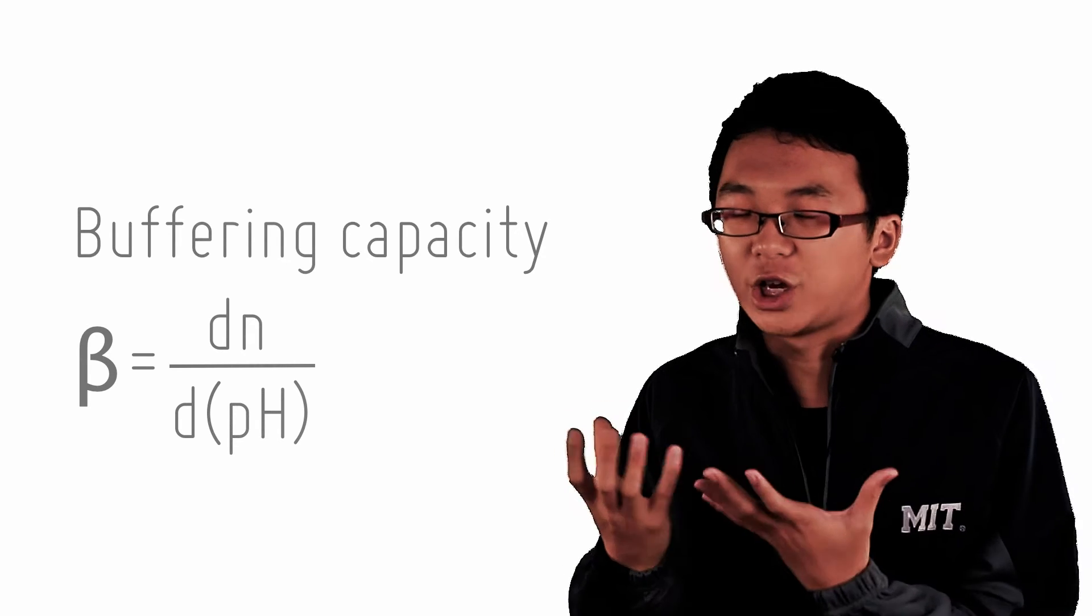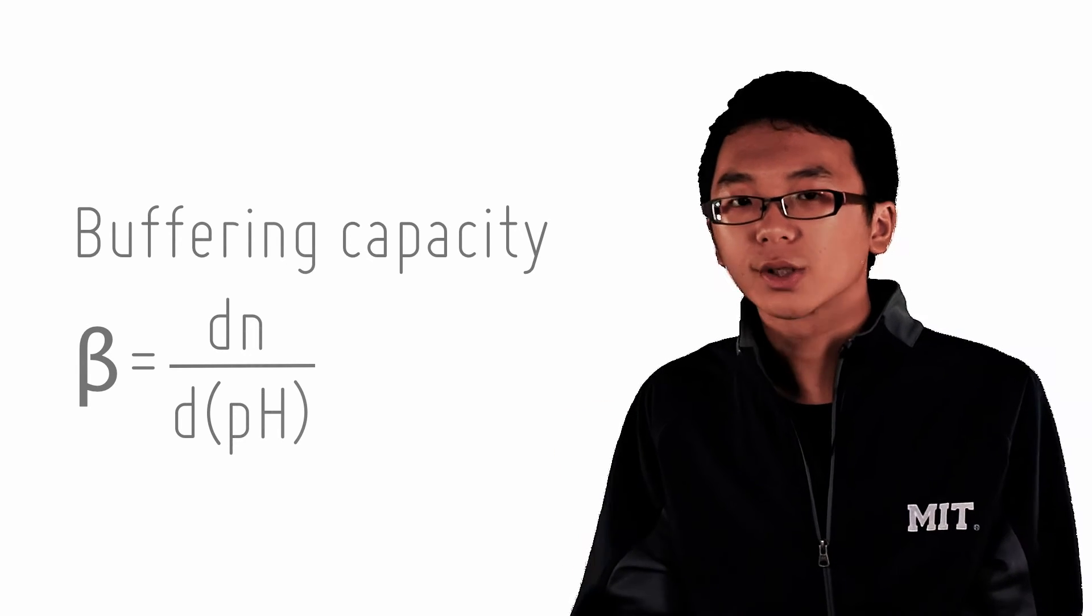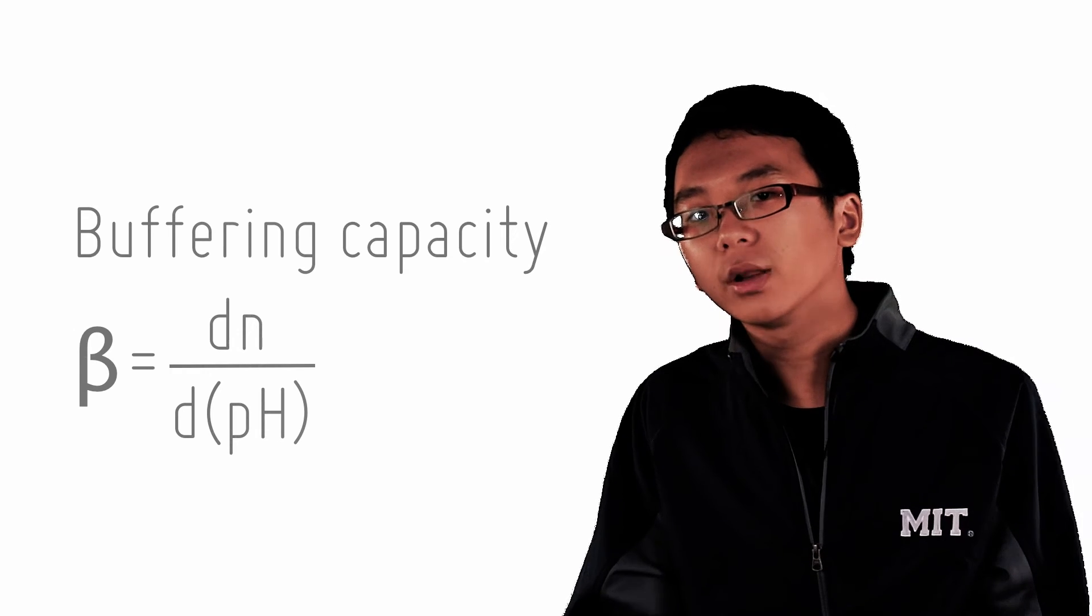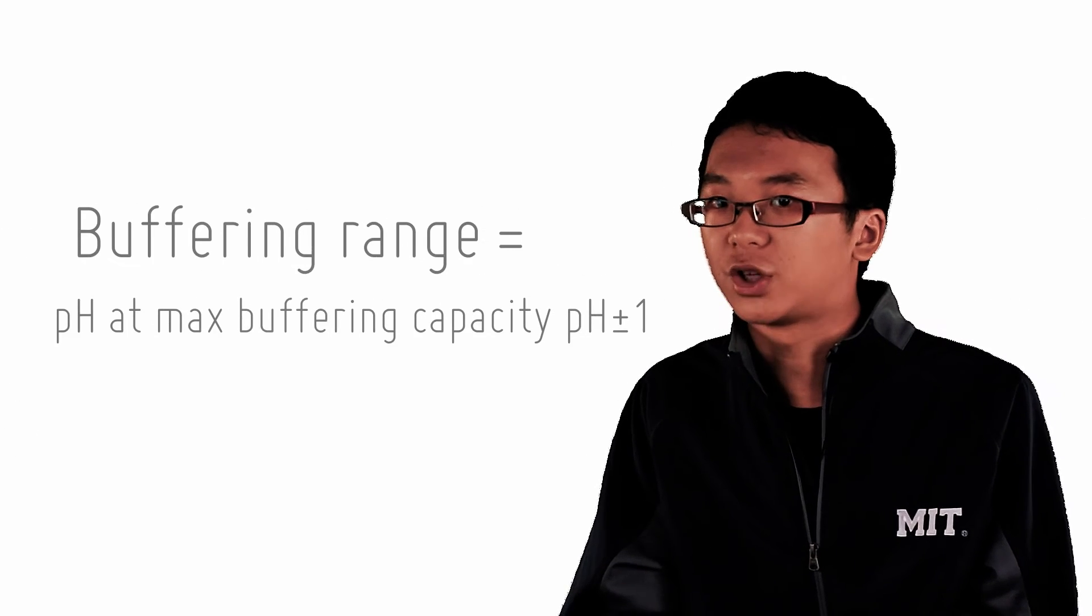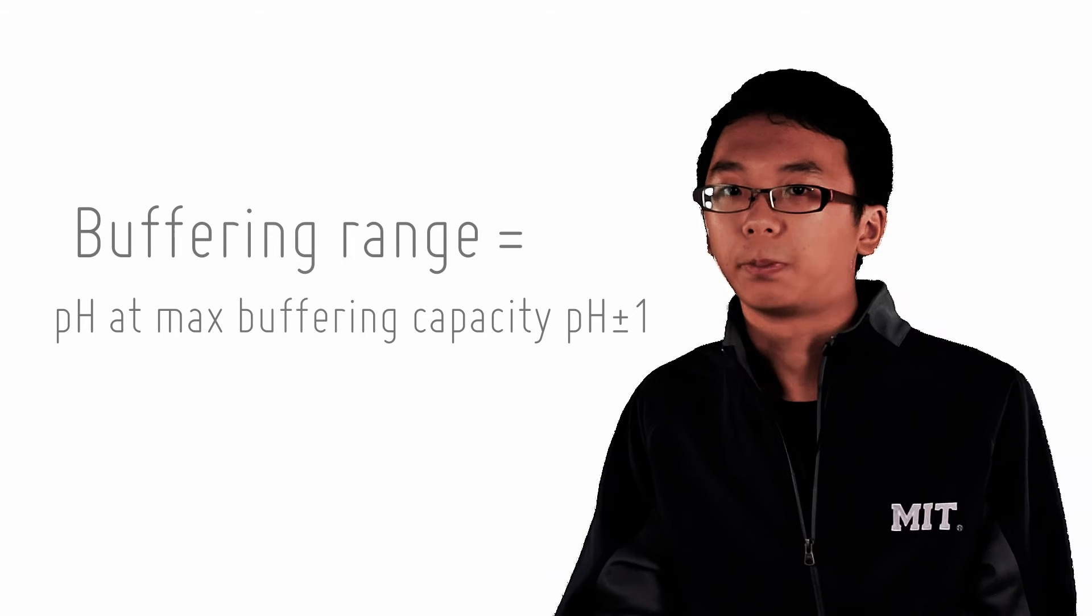Because we've always been saying small change, small addition. How small is this small? Well, the pH buffer range is generally defined as pH at maximum buffering capacity plus minus 1.